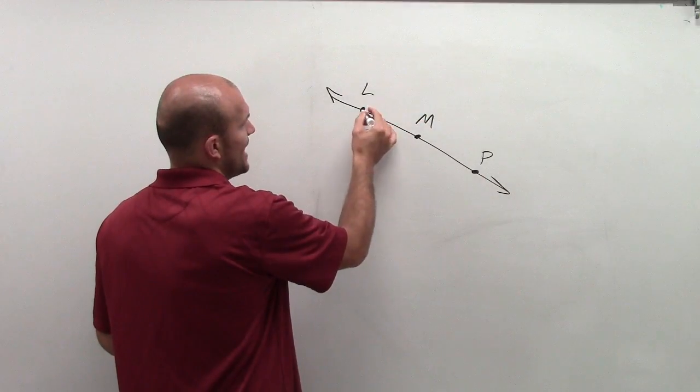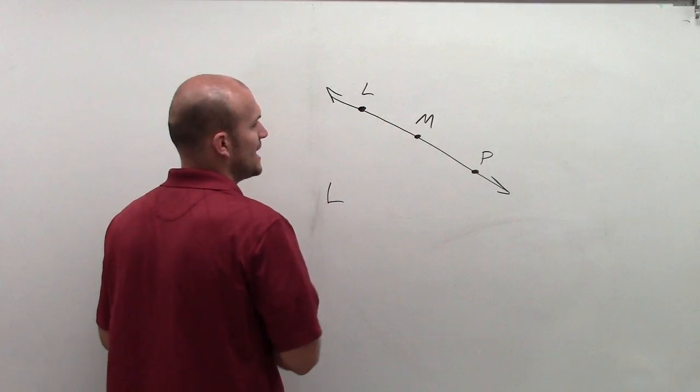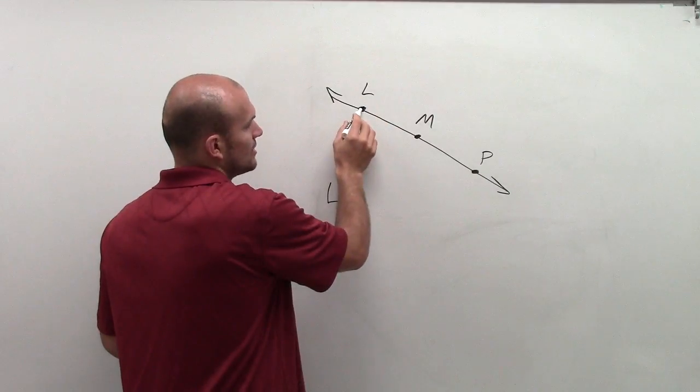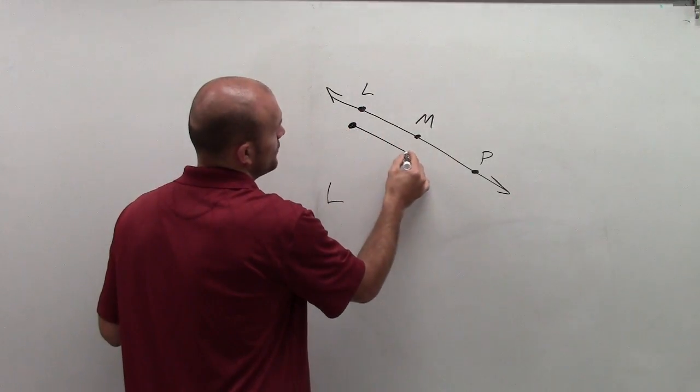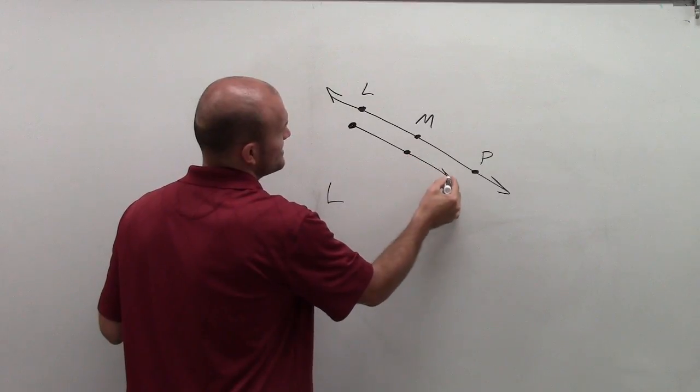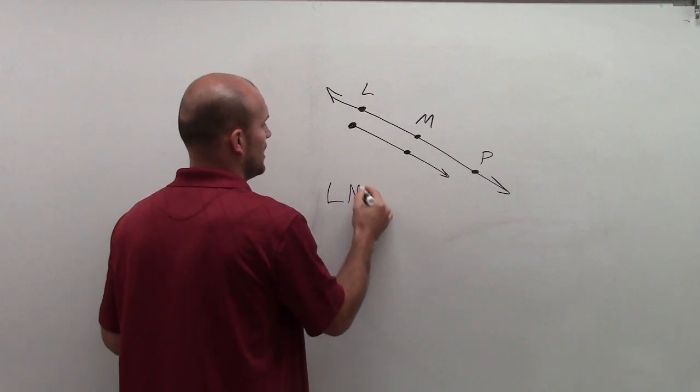So let's start with L as our endpoint. So if I want L to be my endpoint, I could say that L is the endpoint, and it can go through M, and then continue on infinitely. So I could label L, M.